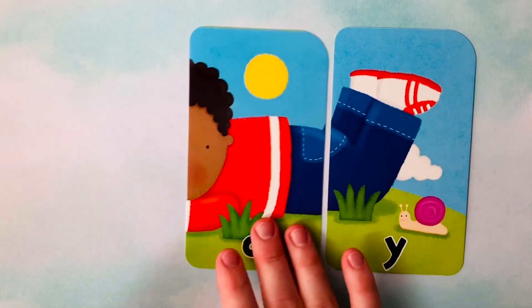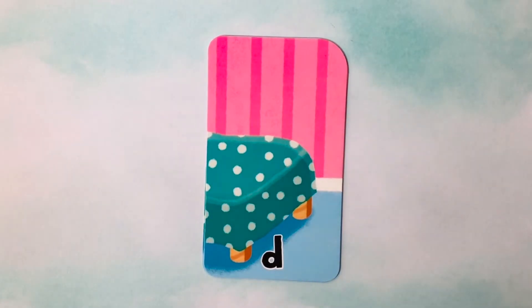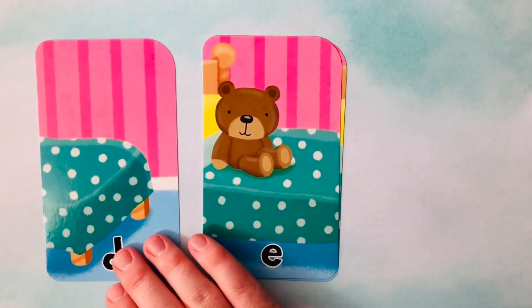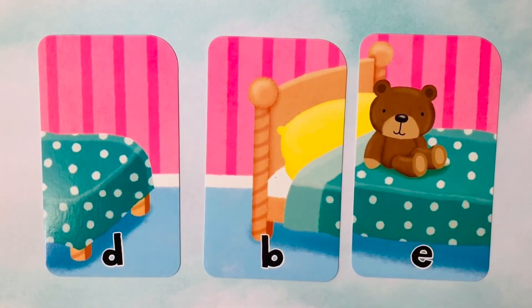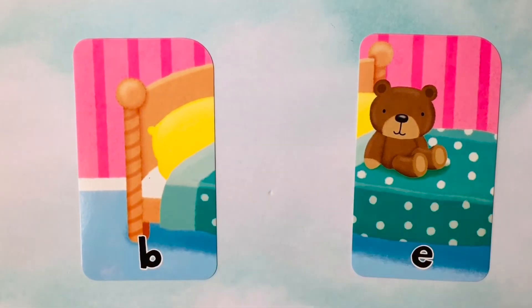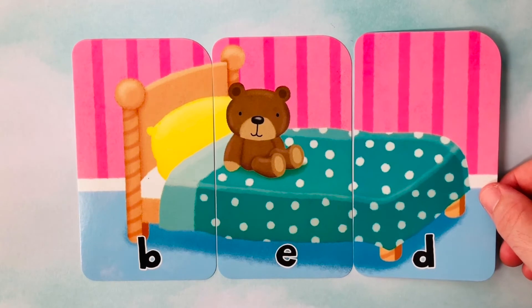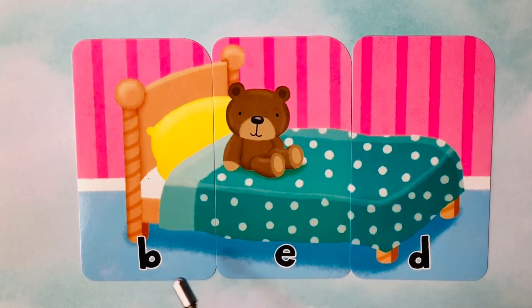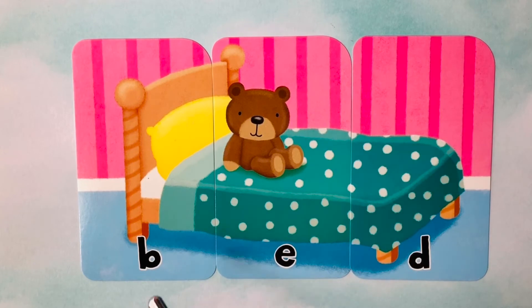Goodbye B, see you later O, after a while Y. I think we have time for one last word — looks like we're beginning with a D. We also have an E, and our last letter is a B. I think we're going to spell bed. Bed starts with a B, follows with an E, and finishes with a D. B-E-D spells bed. You did an amazing job learning to spell words today.